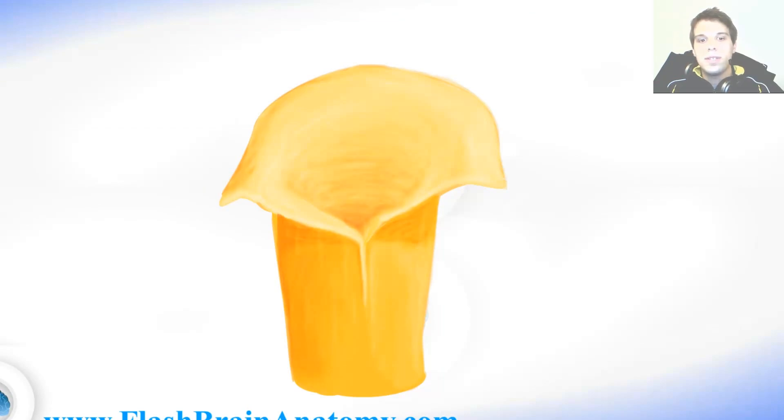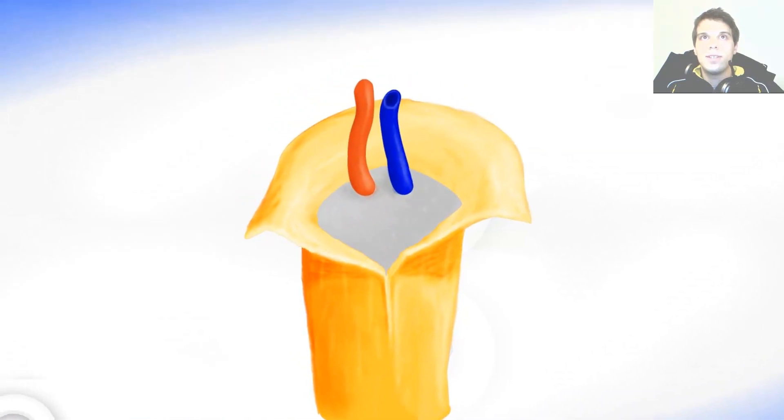Inside of epineurium it's easy to find the fat tissue. There are also arteries and veins, easy to find.